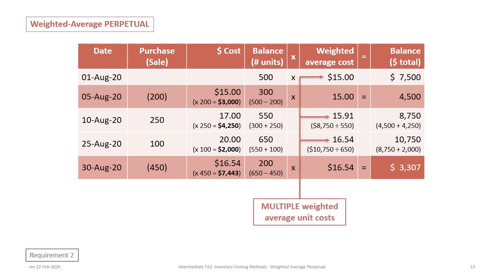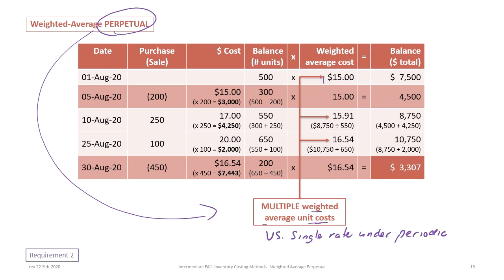Under the perpetual approach we have multiple weighted average unit costs, whereas under the periodic approach there was only one. We began at $15, then after the first purchase the average increased because that purchase was higher than the beginning average, and after the second purchase it increased further. As you can see, the cost only changes after a purchase — it stays the same after a sale.